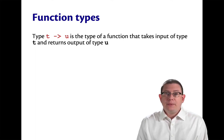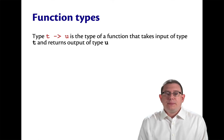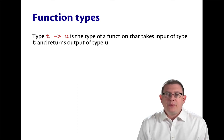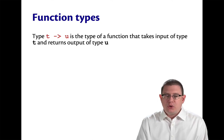A function type is written with an arrow. Type t arrow u is the type of a function that takes an input of type t and returns an output of type u.